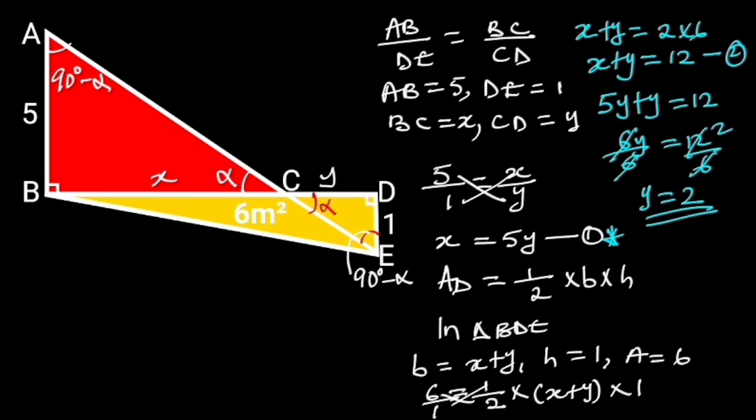To find X, we substitute Y with 2 in equation 2. Doing so will give us X plus 2 is equal to 12. So, X will be equal to 12 minus 2, which is equal to 10.